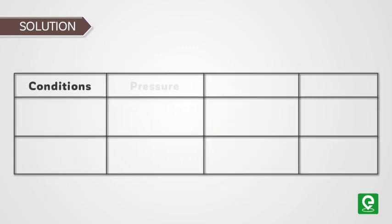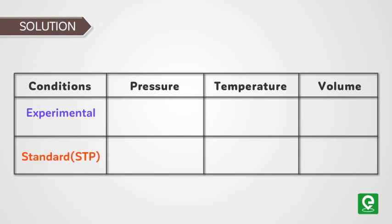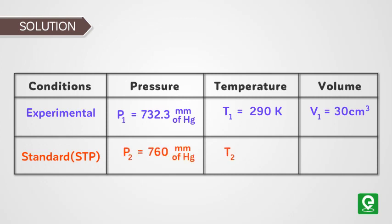Now let's draw a table to list out the values of variables at experimental and standard conditions. In experimental conditions, P1 = 732.3 mm of Hg, T1 = 290 Kelvin, V1 = 30 centimeter cube. In standard conditions, P2 = 760 mm of Hg, T2 = 273 Kelvin, V2 is unknown.